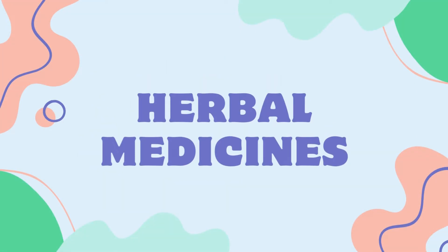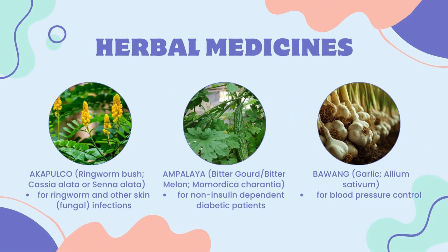There are 10 herbs proven and tested to have medicinal value and approved by the DOH, the Department of Health. First, Acapulco or the ringworm bush is effective for ringworm and other skin fungal infections. Next is Ampalaya, or bitter gourd or bitter melon, which is good for non-insulin-dependent diabetic patients.